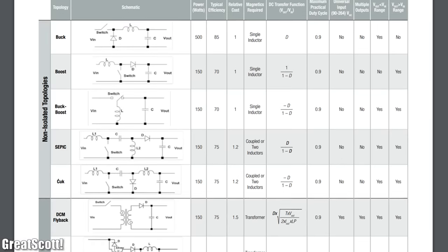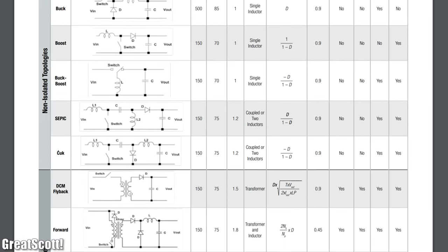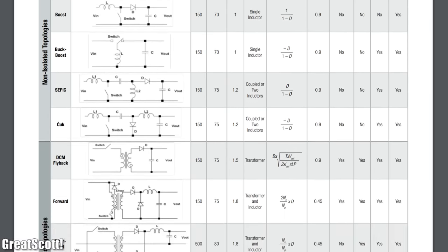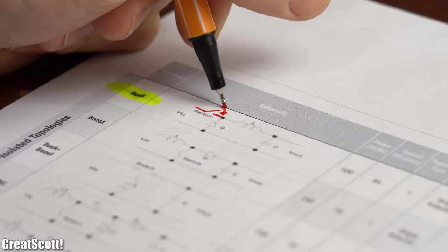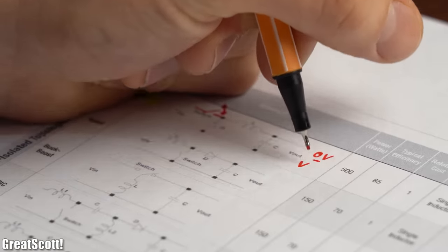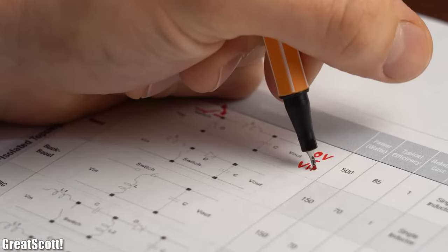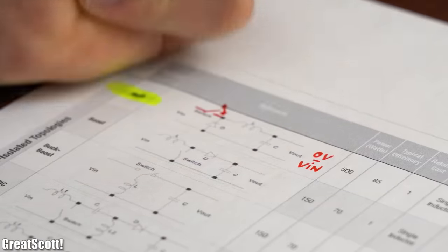First off, I had to decide what kind of topology I wanted to transform into a synchronous one, and I went with the buck converter because in the case of a switch fault we either only get the full input voltage or nothing at all at the output, which is great for testing.